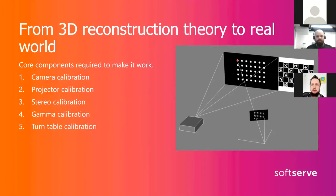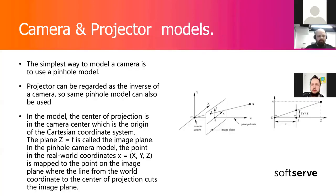In the end, because we want to reconstruct and make the 3D model, we need to turn our object. As strange as it may seem, we also need to calibrate the turntable to understand how it rotates. I will briefly go through the actual theory about calibration but won't spend much time on it.